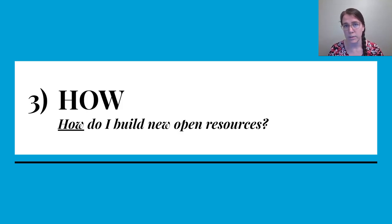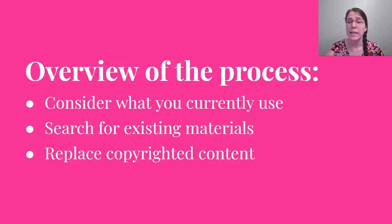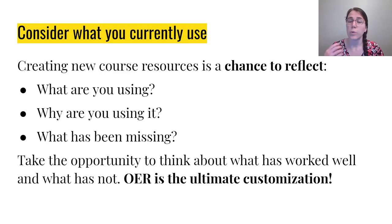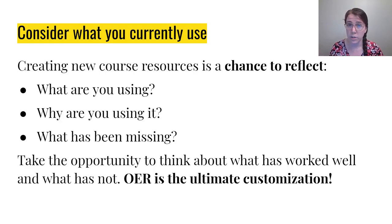So how do we build this? This is a lightning talk, so I'm going to go through an overview. This overview really boils down to three main points: you have to reflect on what you're currently using, search for what is already out there so you don't reinvent the wheel, and make sure to replace any copyrighted content — especially stuff you might not even be aware is copyrighted until you start going through the process. When you think about what you're currently using, this is really a chance to fully reflect on what you've been using, why you're using it, and what you might want to change.